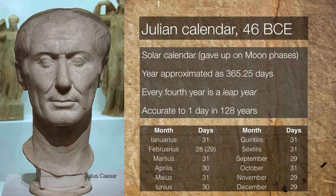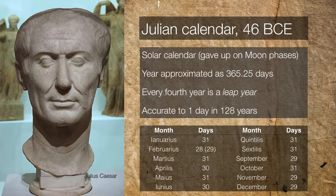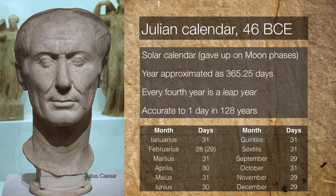Finally, Julius Caesar just decided to abandon the whole idea of keeping track of moon phases and introduced the first modern solar calendar. It doesn't even bother to keep track of the phases of the moon. It just approximates the year at about 365 and a quarter days. And to get around the fact that there is no such thing as a quarter day, every four years would include an extra day.